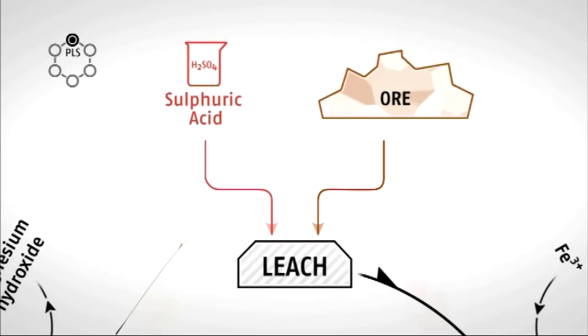The leachate, also known as the pregnant liquor solution or PLS, contains water and free acid as well as dissolved nickel, cobalt, iron and magnesium in the form of metal sulphates.